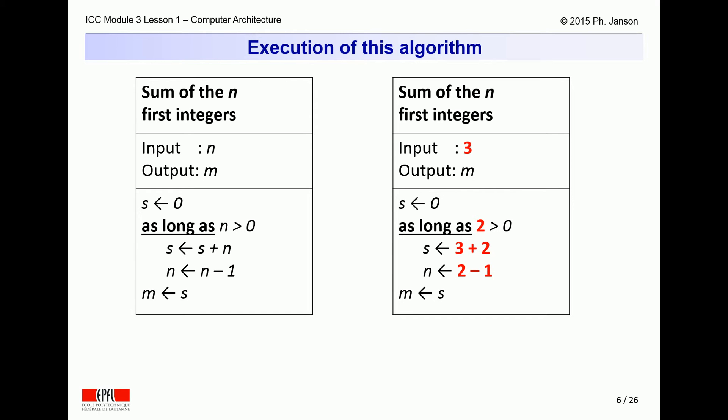This time n equals 2, which is still greater than 0, so the algorithm executes again the same two operations, assigning to s the sum of itself, 3, and n, 2, and decrementing n by one more unit from 2 to 1, before returning once again to the initial test. This time n equals 1, which is still greater than 0, so the algorithm executes once again the same two operations, assigning to s the sum of itself, 5, and n, 1, and decrementing n by one more unit from 1 to 0 before returning once again to the initial test.